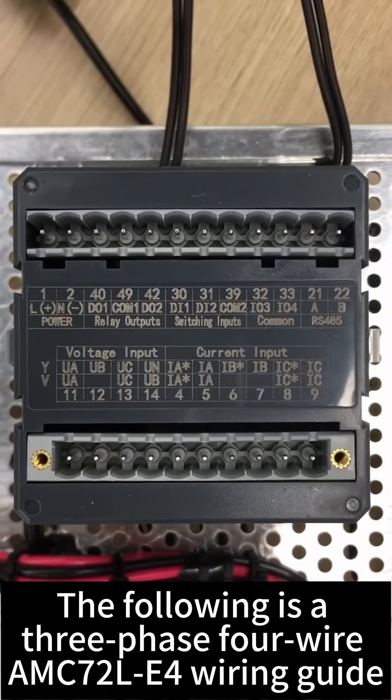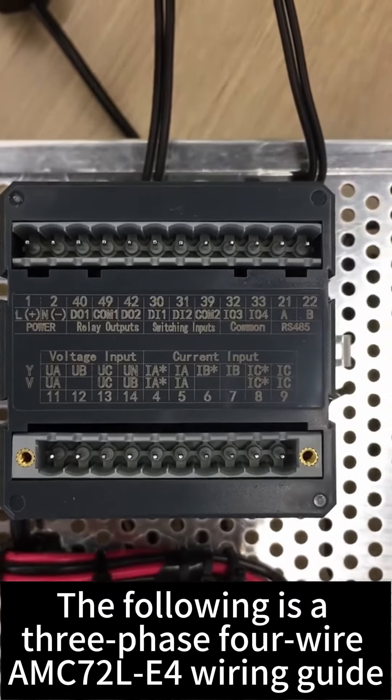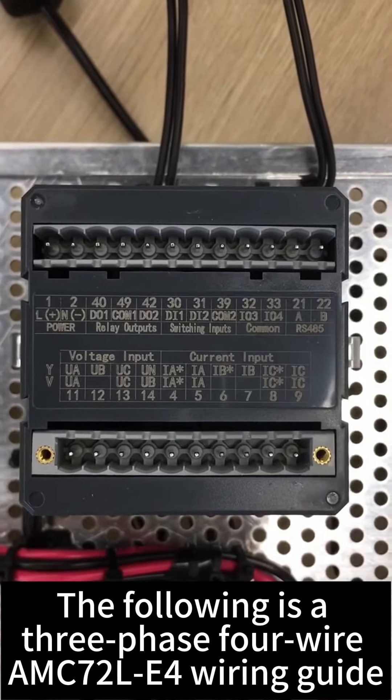The following is a three-phase four-wire AMC72L-E4 wiring guide.